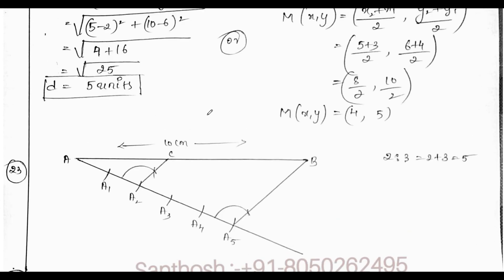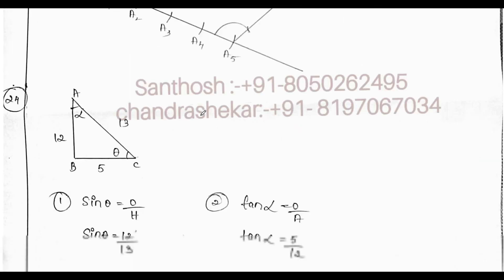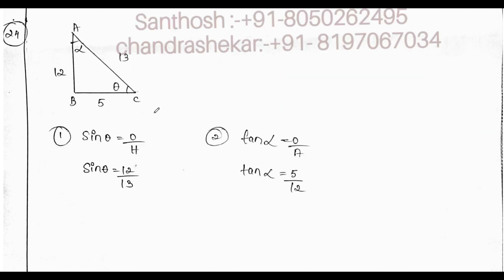Question number 23, division of line segment. 24th question is based on trigonometry. Sin theta equals opposite by hypotenuse, tan alpha equals opposite by adjacent. We get sin theta equals 12 by 13, tan alpha equals 5 by 12.